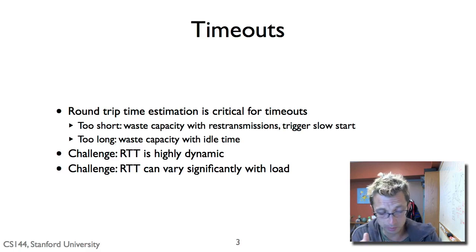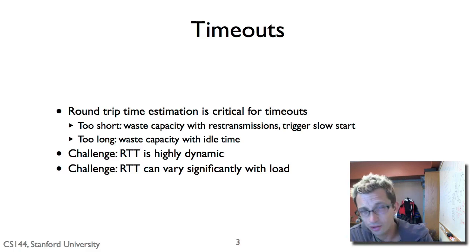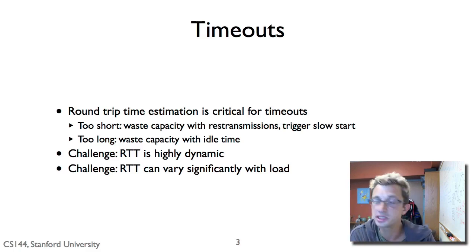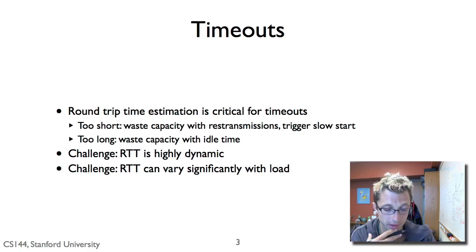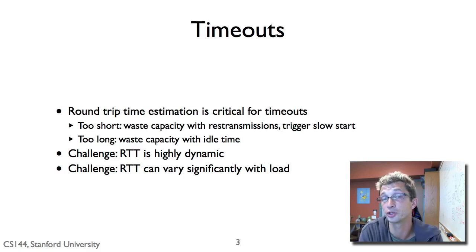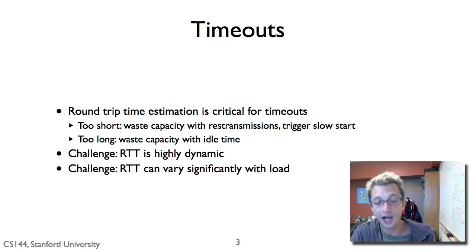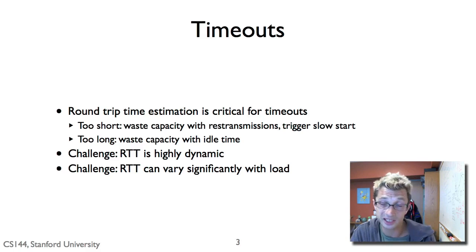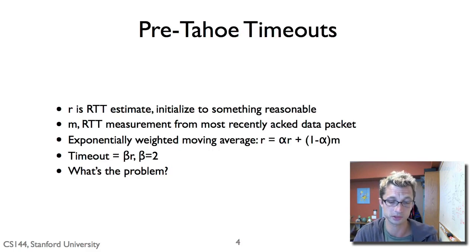The real challenge is that especially on the internet, as we've seen with packet switching, RTT can be highly dynamic. Furthermore, it can vary significantly with load. Even as you start sending things faster, you can change your own RTT even if the rest of the world remains the same. So how do you estimate RTT inexpensively and quickly given these constraints?